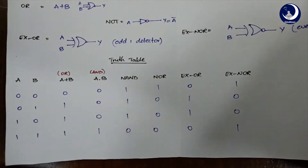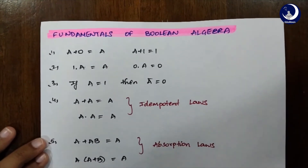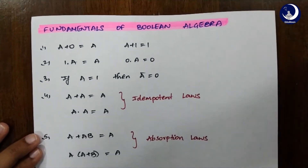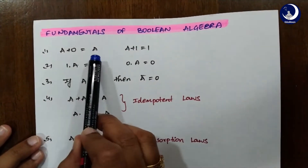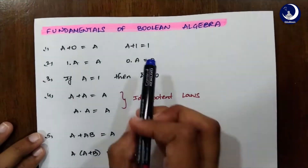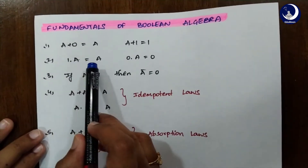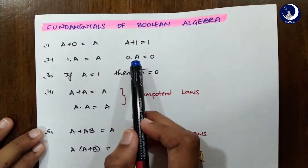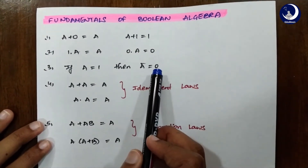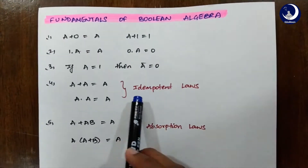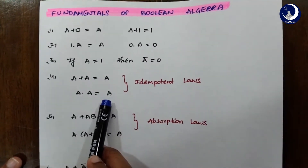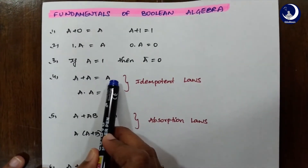Now let's look on to a few fundamentals of Boolean algebra. You can just keep on remembering them as many problems as you solve. At first: A+0=A and A+1=1, since 1 plus anything equals 1. Also 1·A=A and 0·A=0, because 0 multiplied with anything equals 0. Now if A=1 then Ā=0 — a simple complementing formula. And now let's consider the idempotent law: A+A=A and A·A=A.